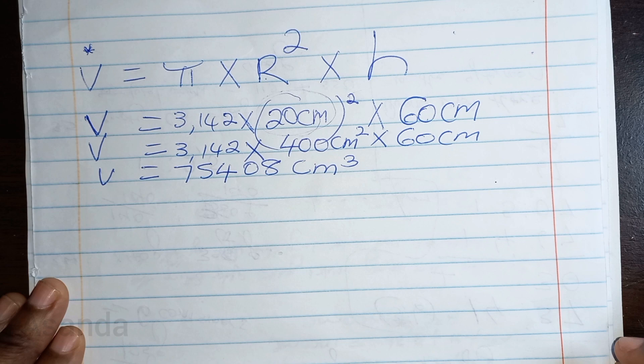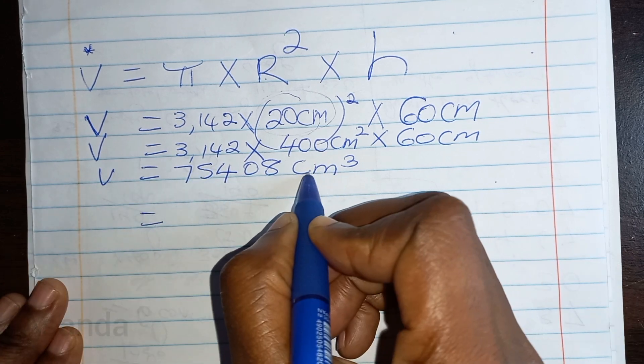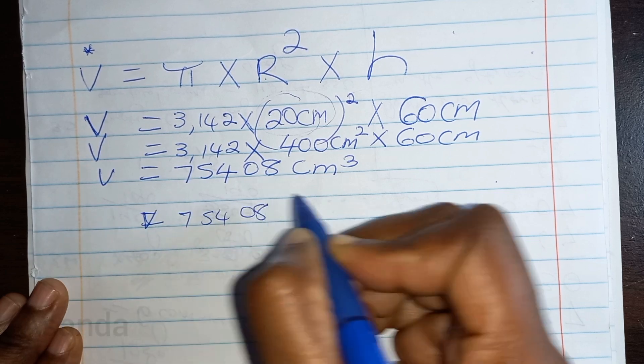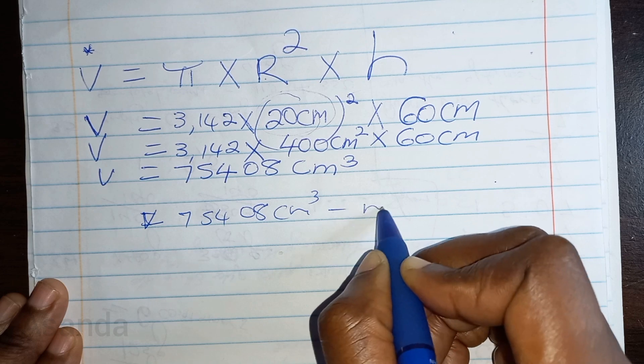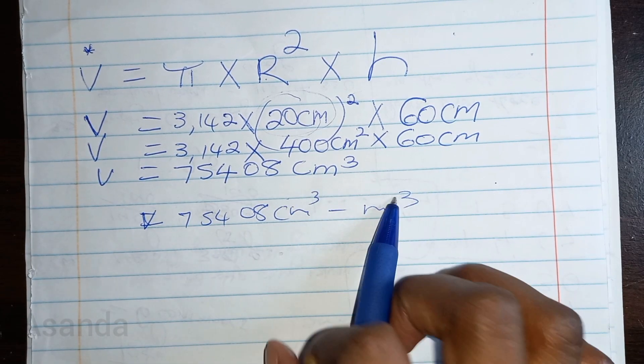So we're going to go ahead and convert the answer with this one. We're changing 75,408 centimeters cubed to meters cubed. We're moving from centimeter to meter.